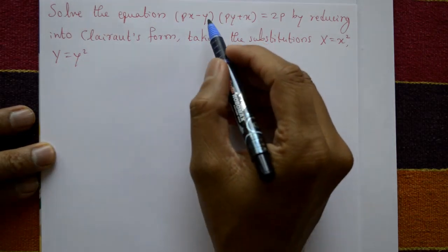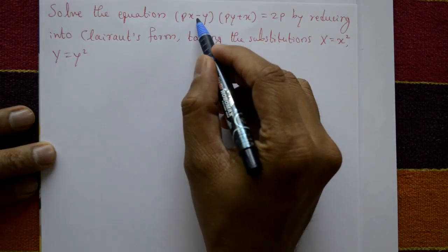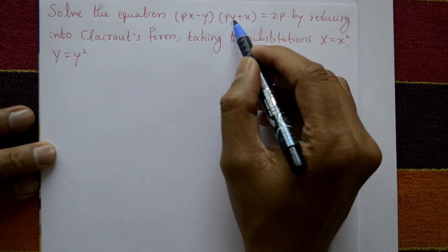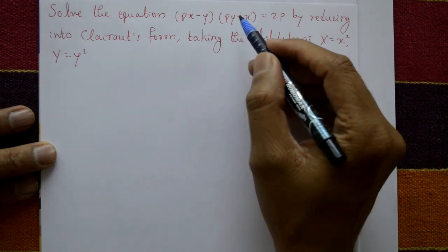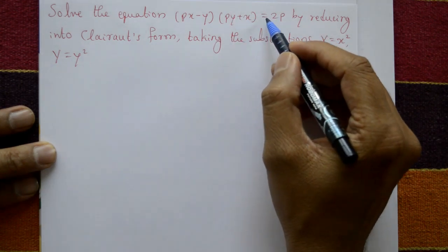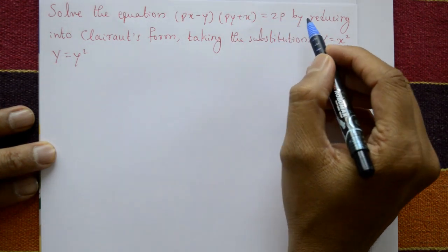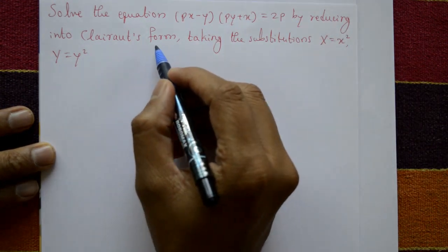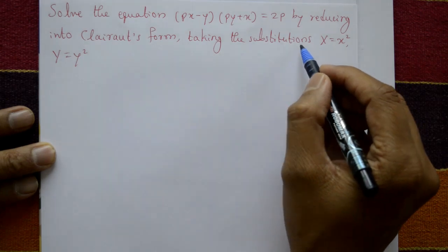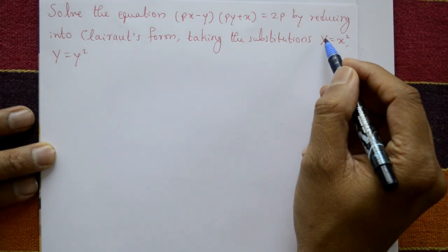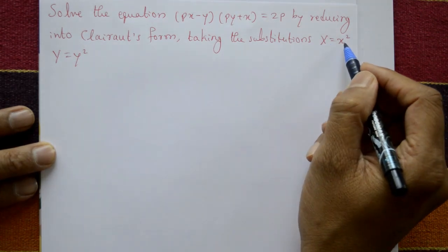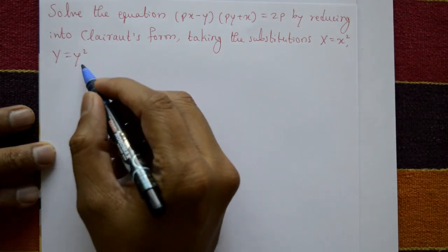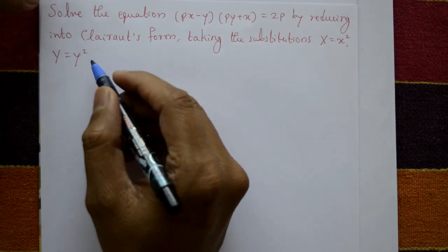Solve the equation (px - y)(py + x) = 2p by reducing into Clairaut form, taking the substitution capital X = x² and capital Y = y².